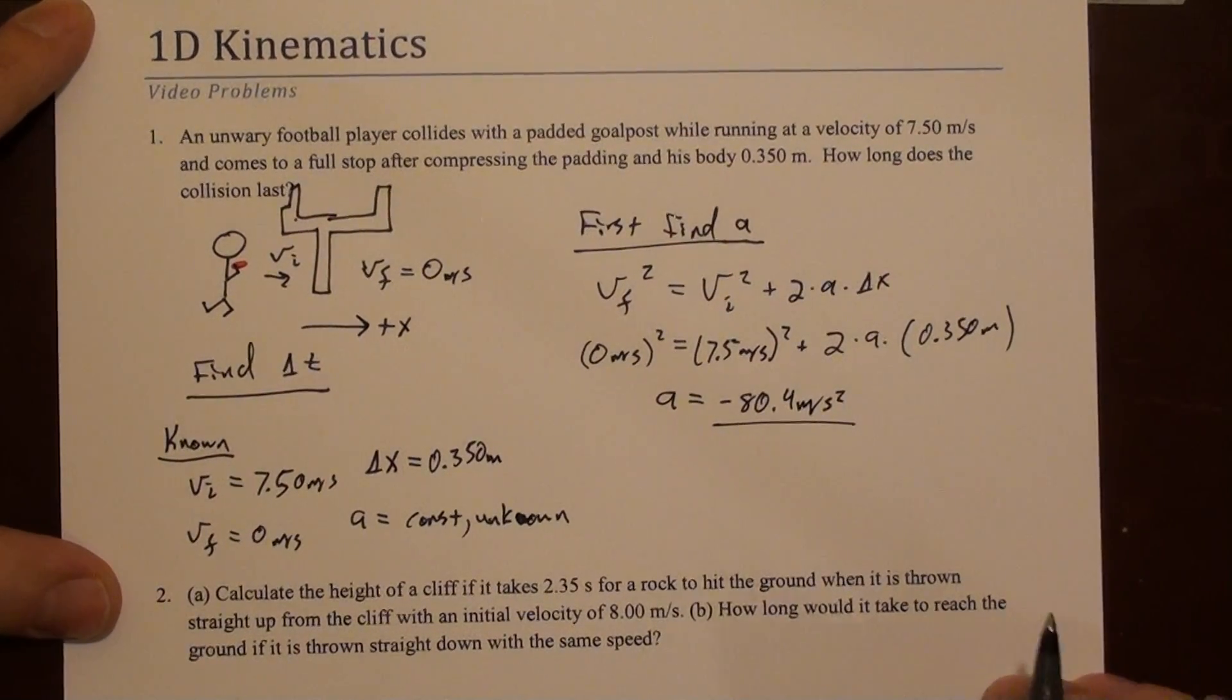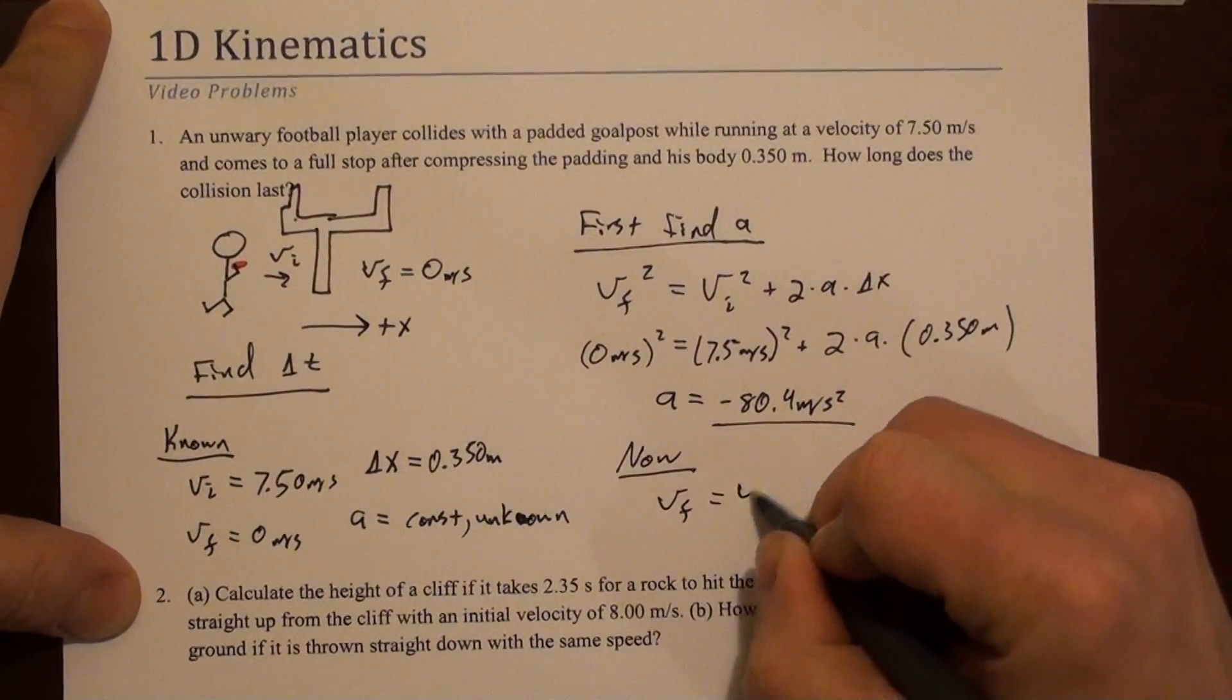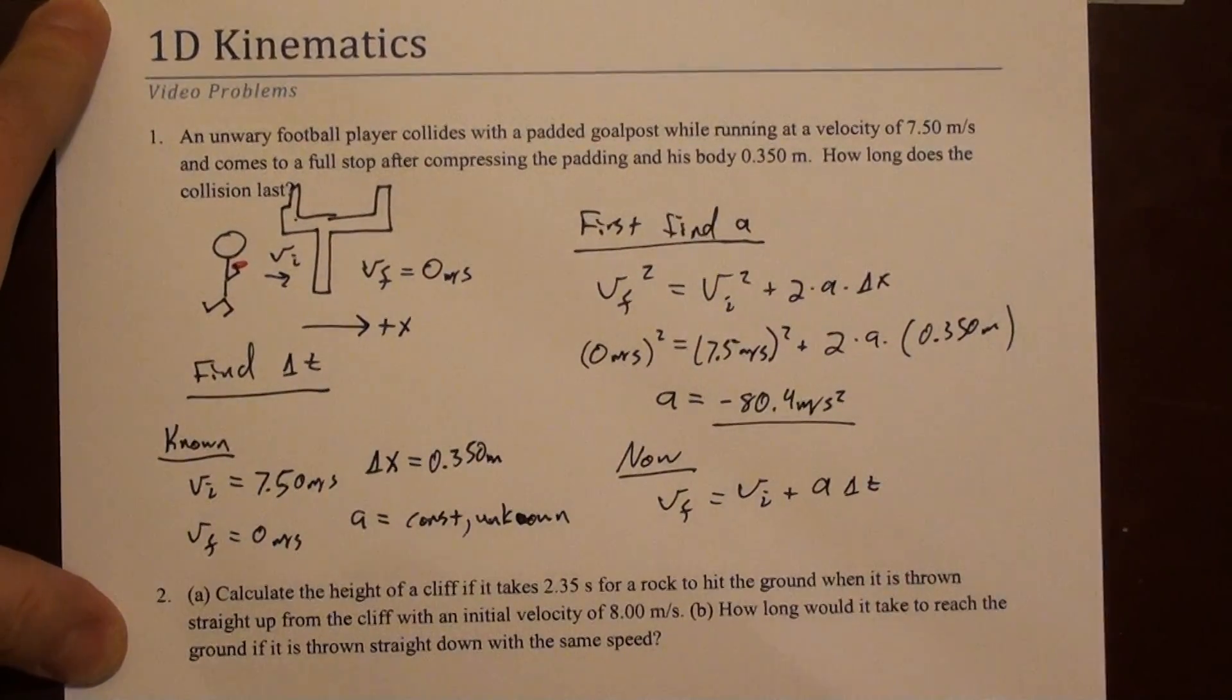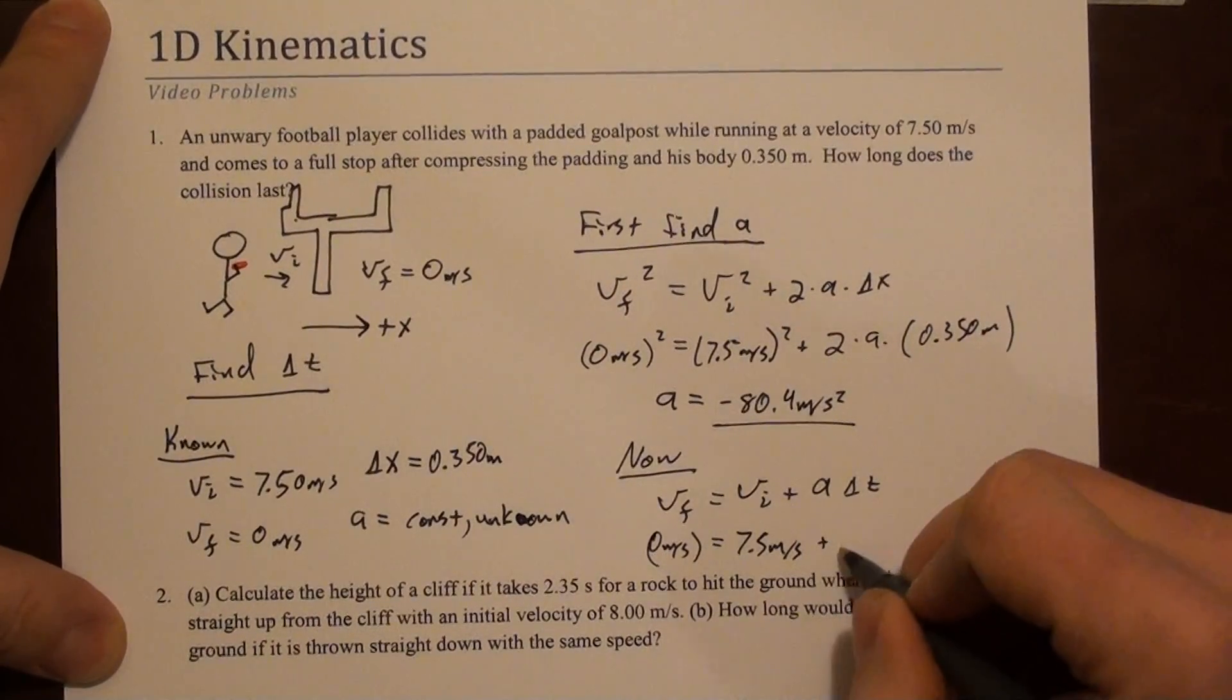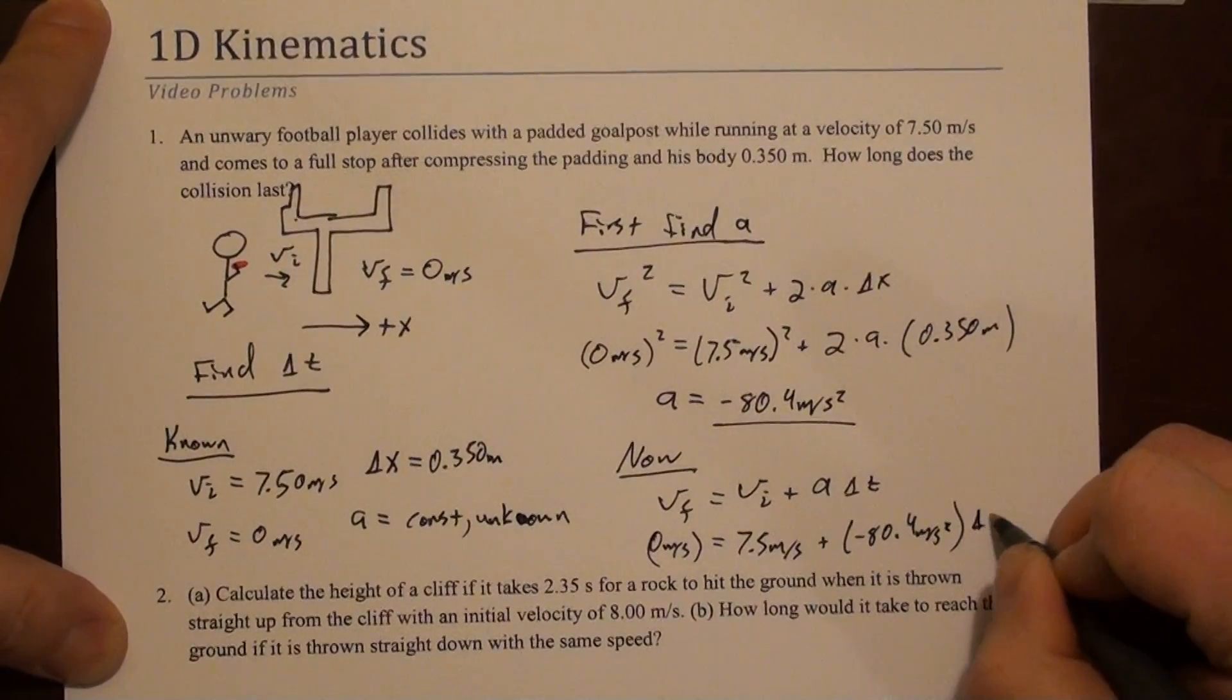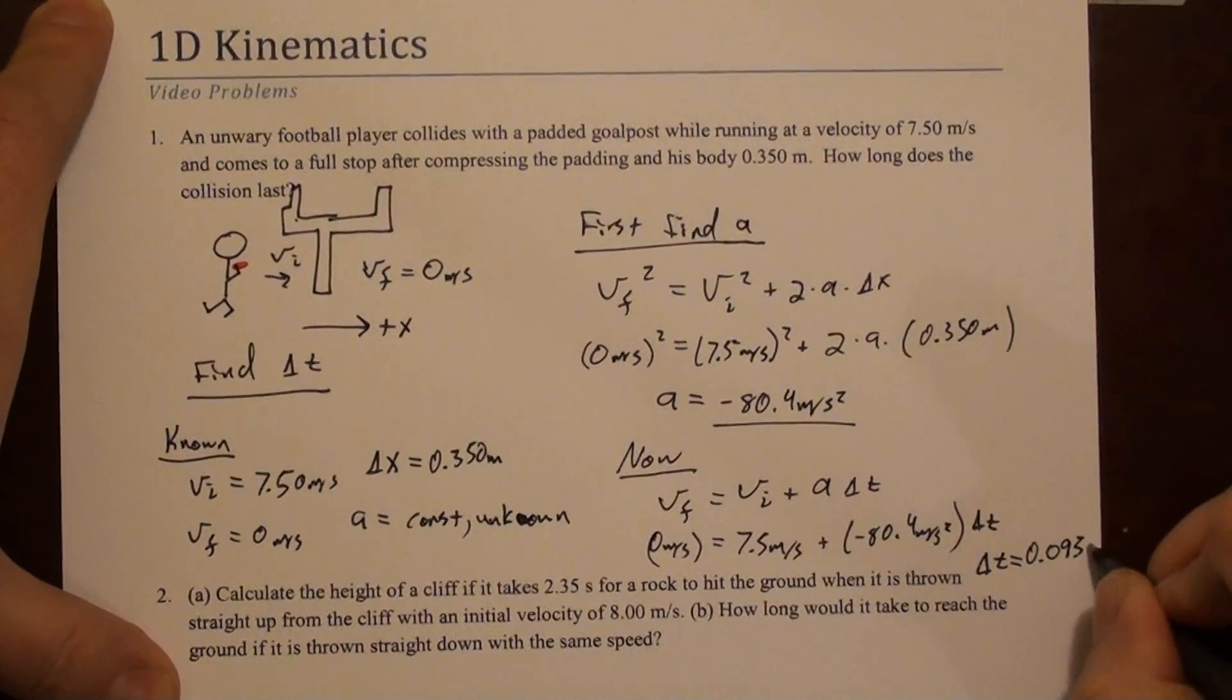Now we can put that together with what we already know to find delta t. Looks like we could say v final equals v initial plus a delta t. V final is still 0 meters per second. V initial is 7.5 meters per second. Plus a negative 80.4 meters per second squared times delta t. And if you solve this, this gives a delta t of 0.093 seconds.